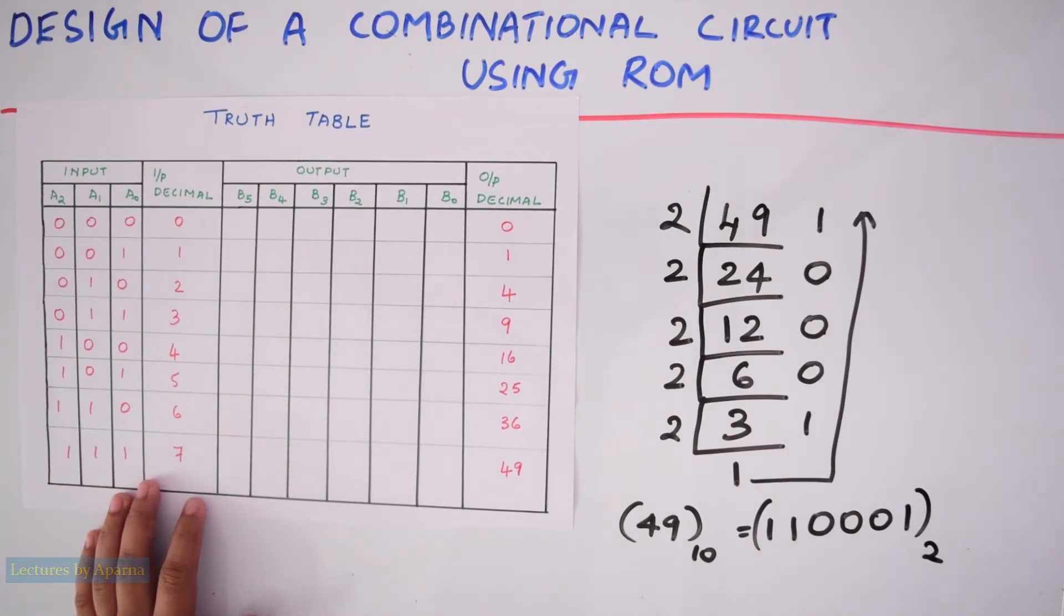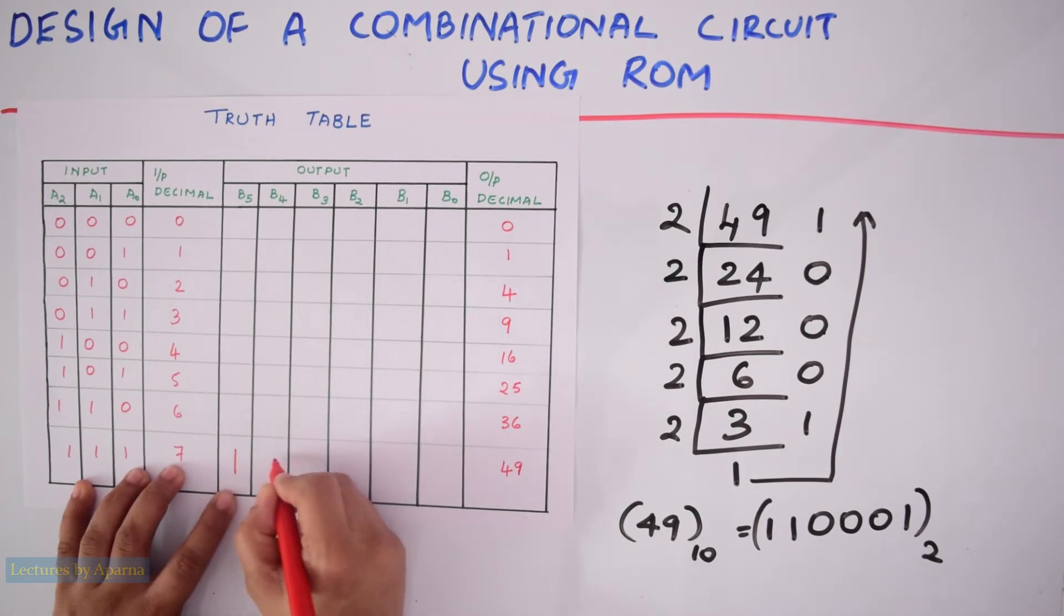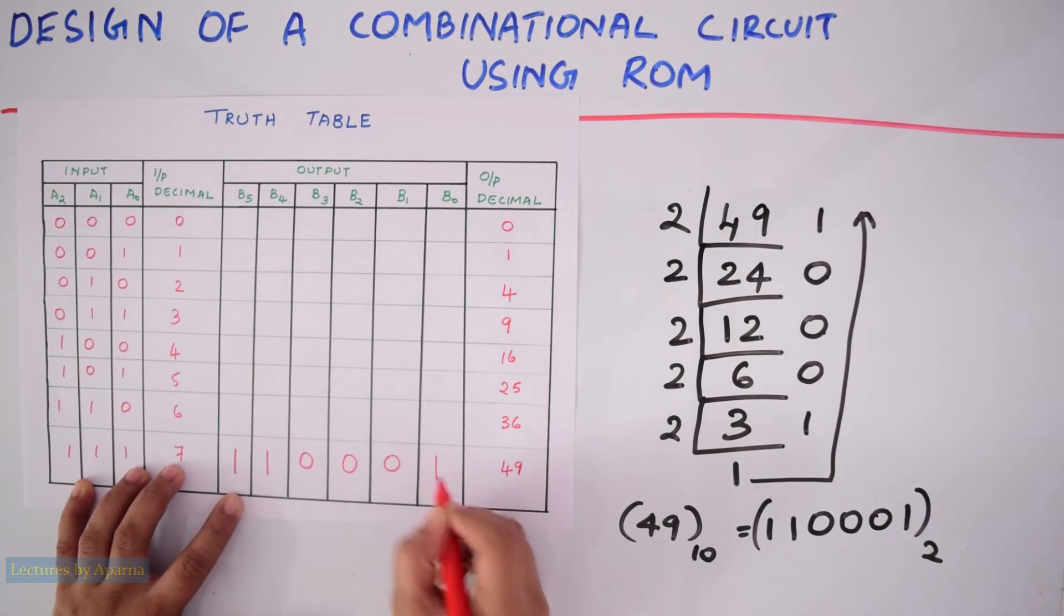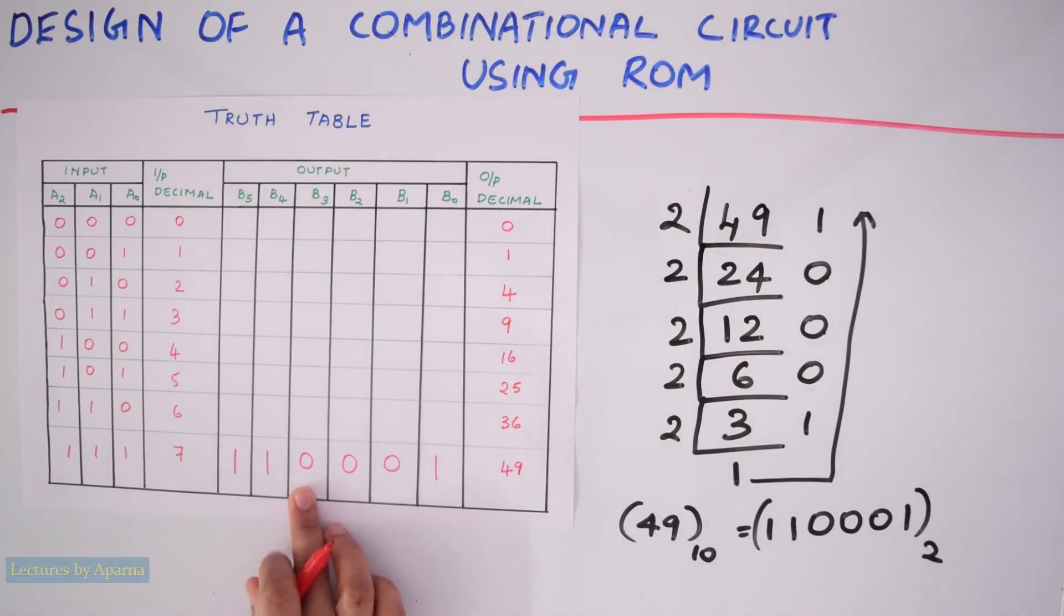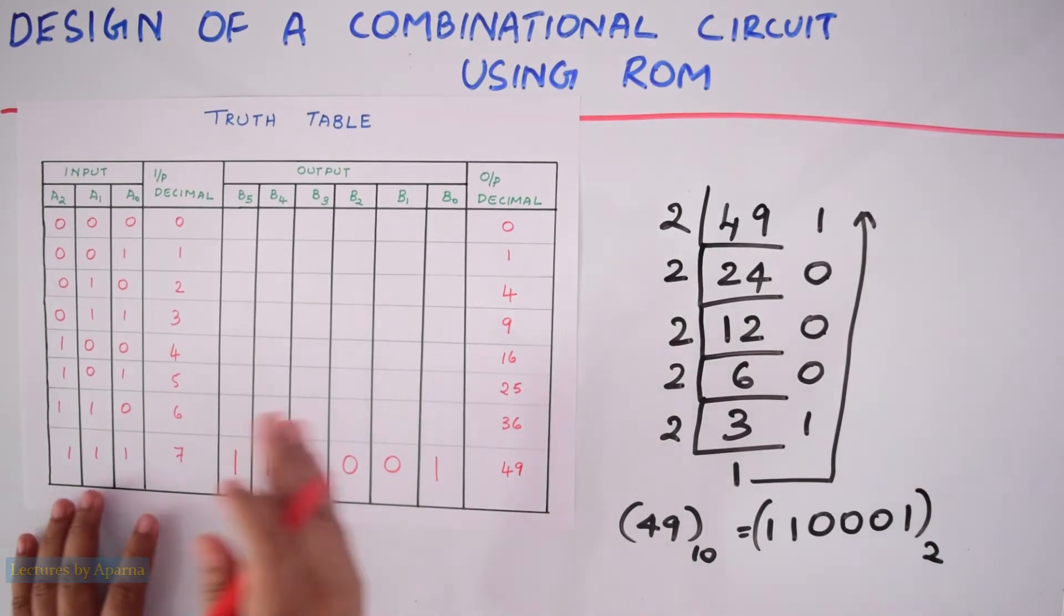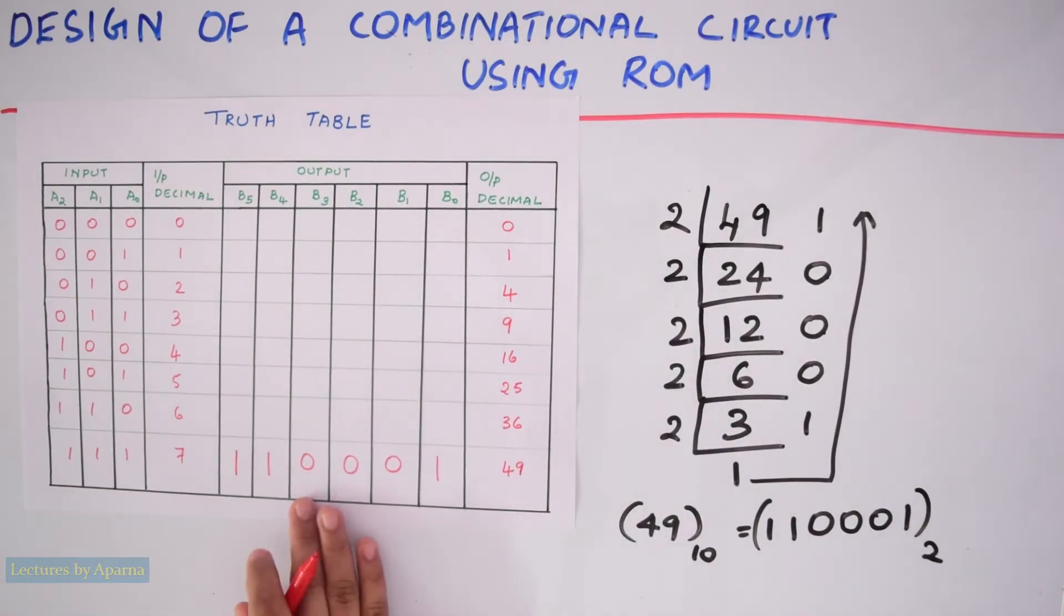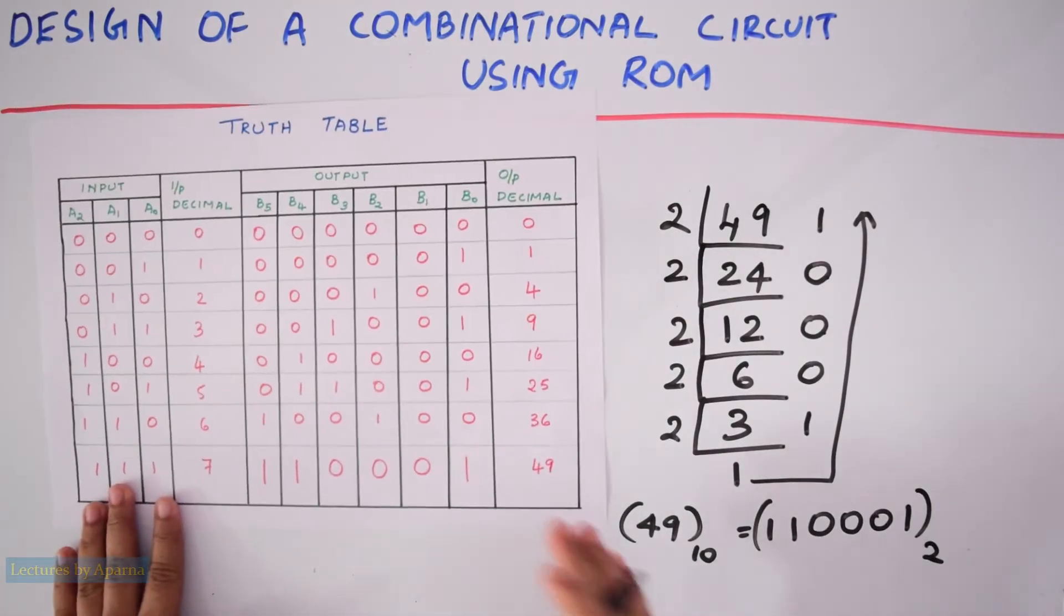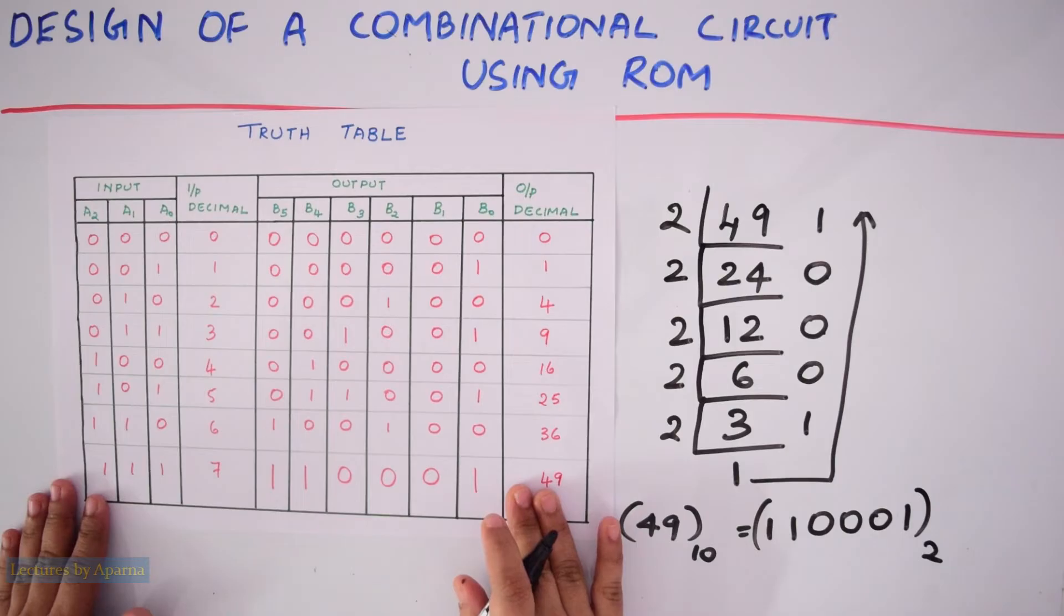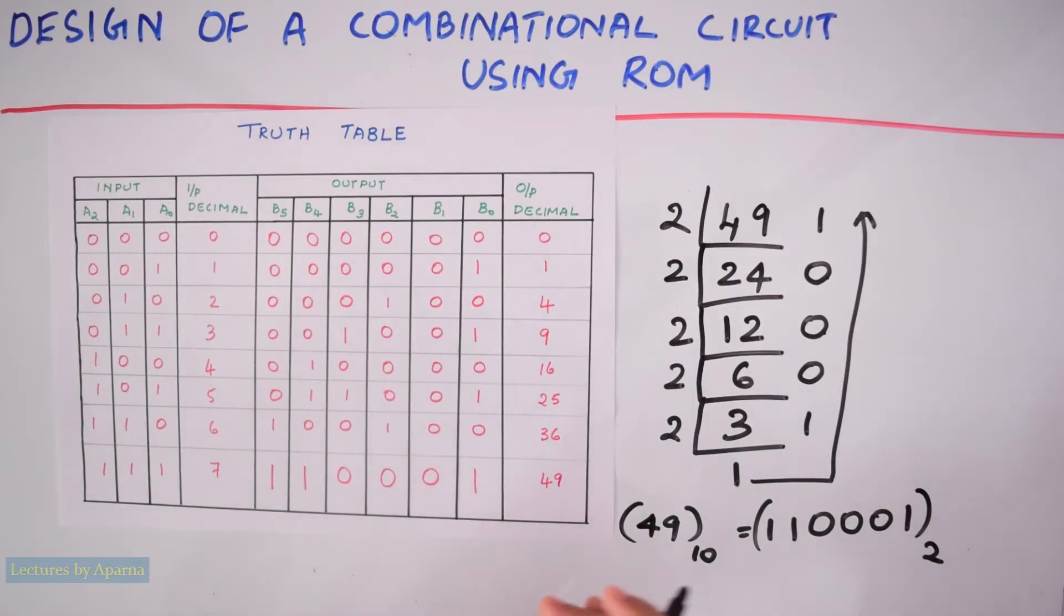So I have to write this number in this column. It will be 110001. Like this, I have to fill the binary equivalent of all these decimal numbers. Now we have written the truth table. Next, we have to draw the logic diagram.